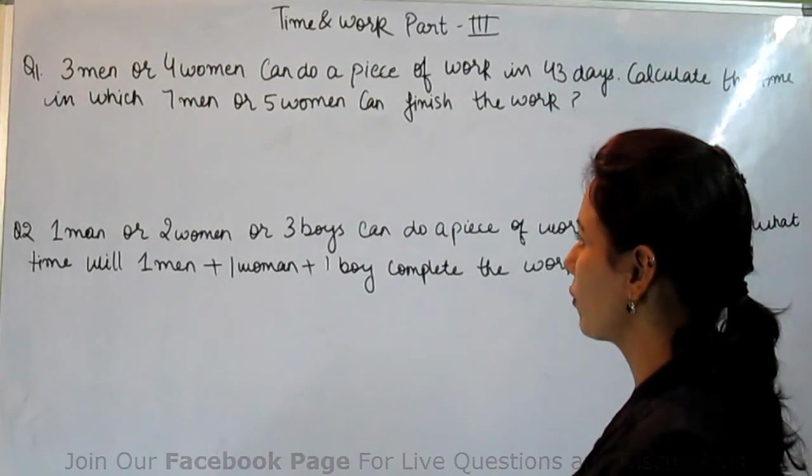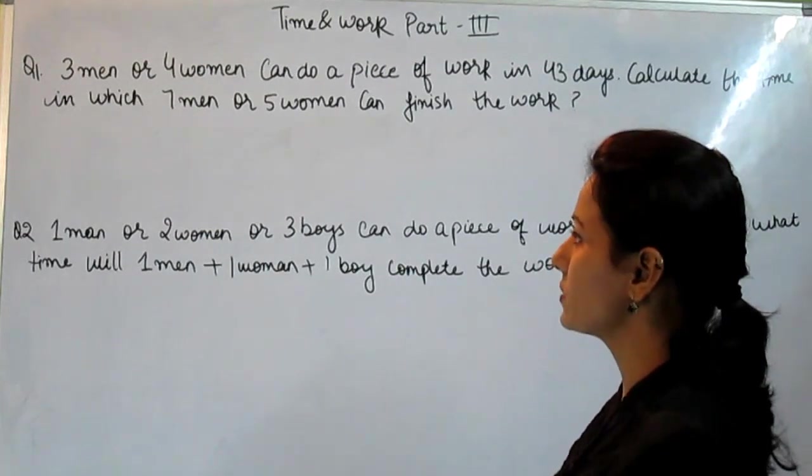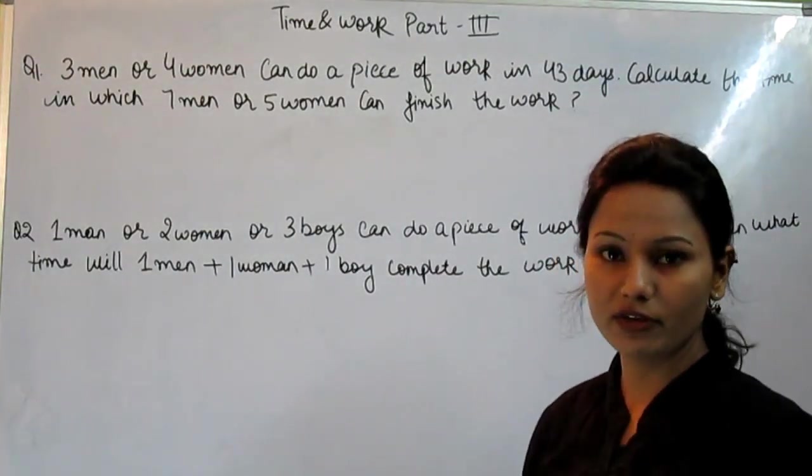First question is: 3 men or 4 women can do a piece of work in 43 days. Calculate the time in which 7 men or 5 women can finish the work.